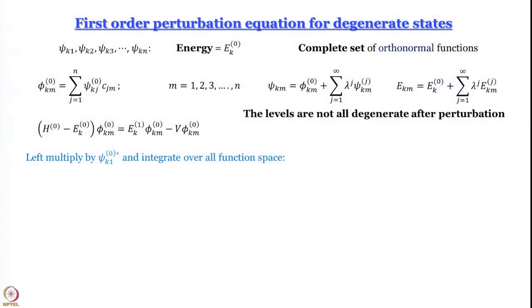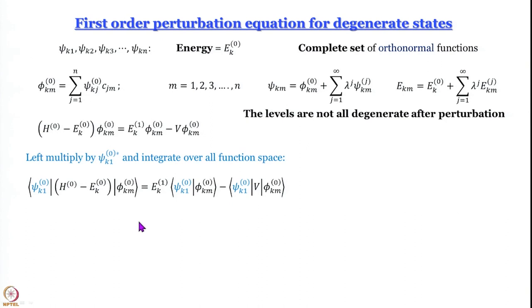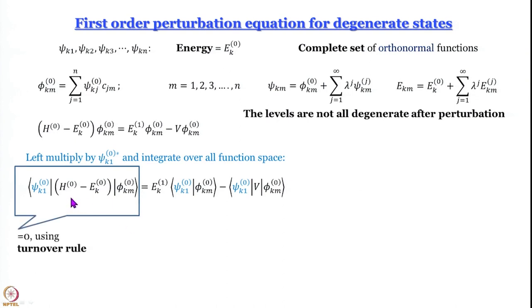As usual, we left-multiply by psi_{k1}^(0)* (its complex conjugate) and integrate over all function space. On the left-hand side we get the integral of psi_{k,0}^* times (H^(0) - E_k^(0)) acting on phi_{km}^(0). On the right-hand side, E_k^(1) comes out as a constant, and the second term involves a triple product of phi_{k1}^(0)*, V, and phi_{km}^(0). By the turnover rule, H^(0) - E_k^(0) annihilates psi_{k1}^(0), so the left-hand side equals zero.